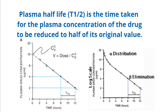Since this follows first-order kinetics, at any time you can look at the concentration and see at which point it comes to half the initial concentration. Taking the concentration at time 4 hours — which is 8 microgram per ml — the point at which it comes to 50%, that is 4 microgram per ml, is again 4 hours. Similarly, from 4 microgram per ml to 2 microgram per ml takes another 4 hours. So this is half-life: the time taken for the plasma concentration of the drug to be reduced to half of its original value.